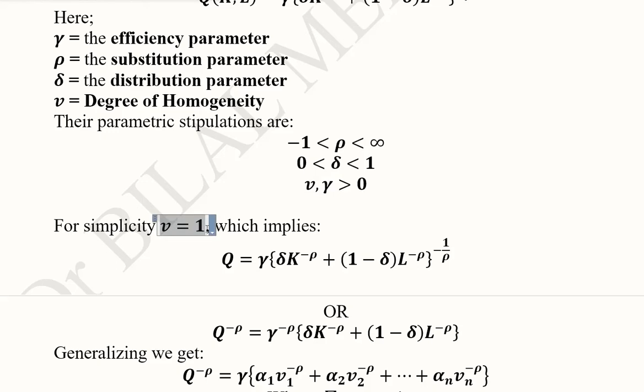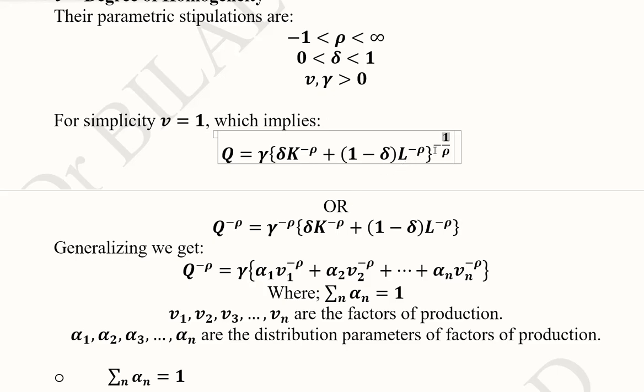For simplicity, we assume ν = 1. Furthermore, we shift the power to the other side by raising both sides to the power -ρ. The benefit is that we won't have to solve the whole power, which would be very difficult and require binomial expansion. We want to avoid that intricacy.